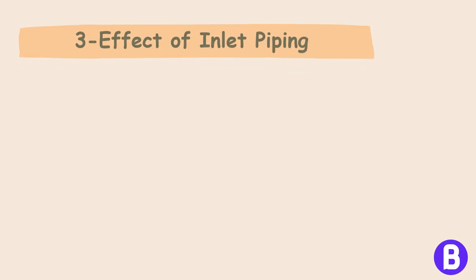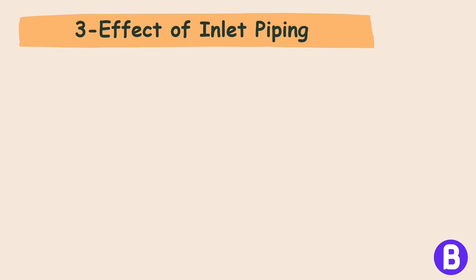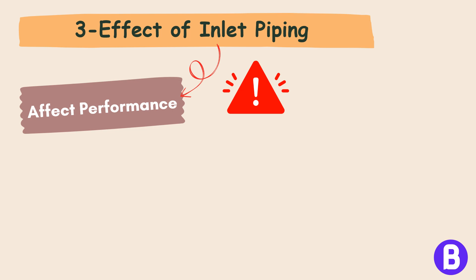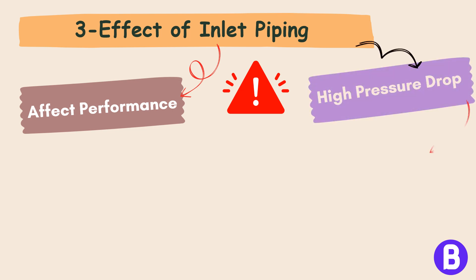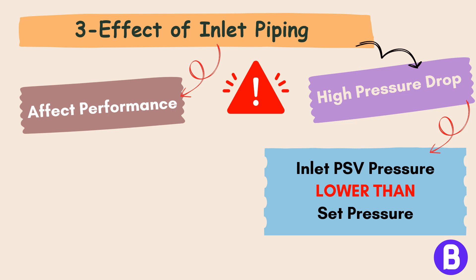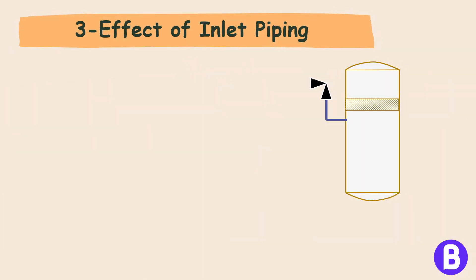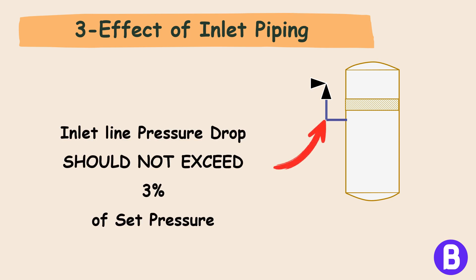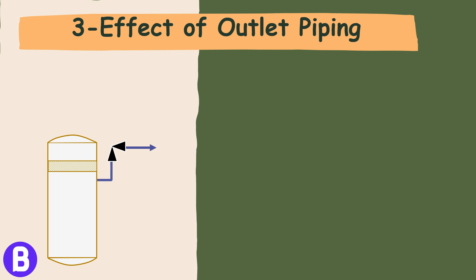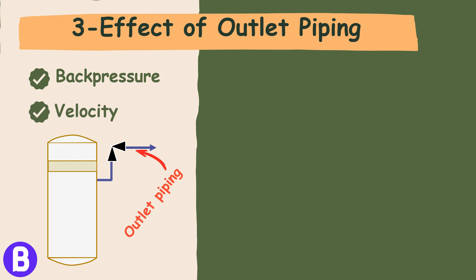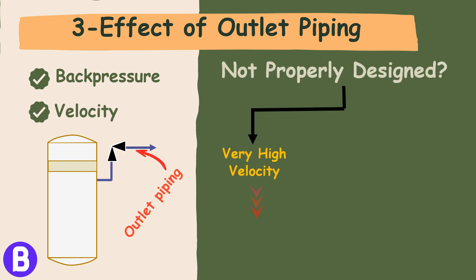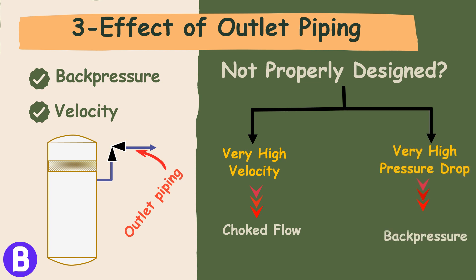Factor 3: Effective Inlet and Outlet Piping. Inlet and outlet piping configurations significantly impact PSV performance. A high pressure drop in the inlet piping would lead the PSV to sense a lower pressure than the actual pressure, causing PSV chattering and interference with the PSV blowdown characteristics. To prevent this, it is critical to ensure that the pressure drop in the inlet line does not exceed 3% of the PSV's set pressure. Conversely, for outlet lines, a very high velocity can lead to choked flow, while a very high pressure drop shall cause high backpressure on the PSV, both affecting the PSV's ability to relieve pressure effectively and potentially leading to unstable valve operation.